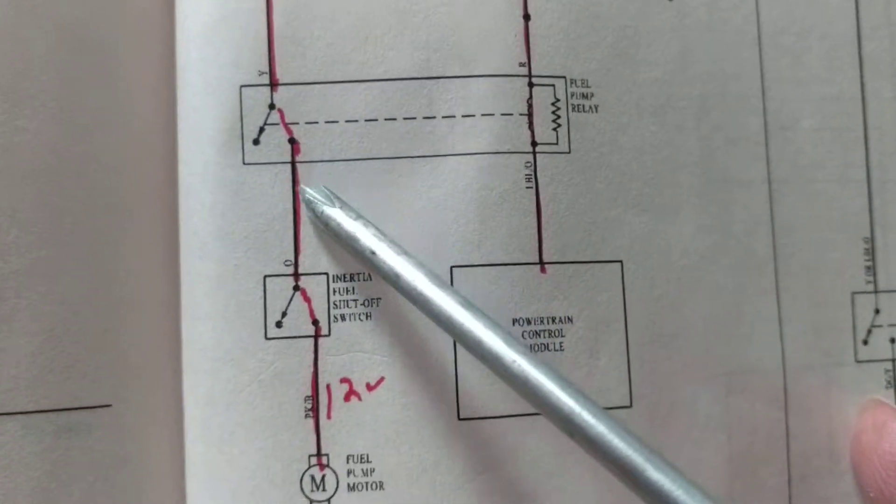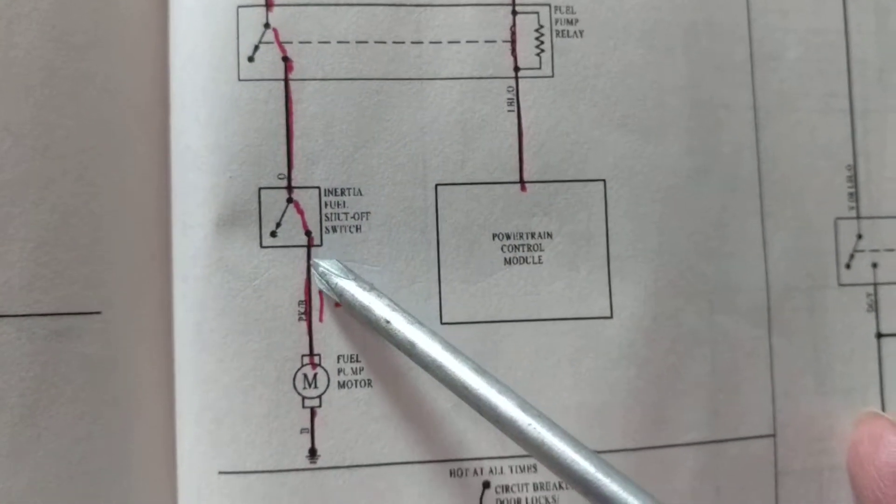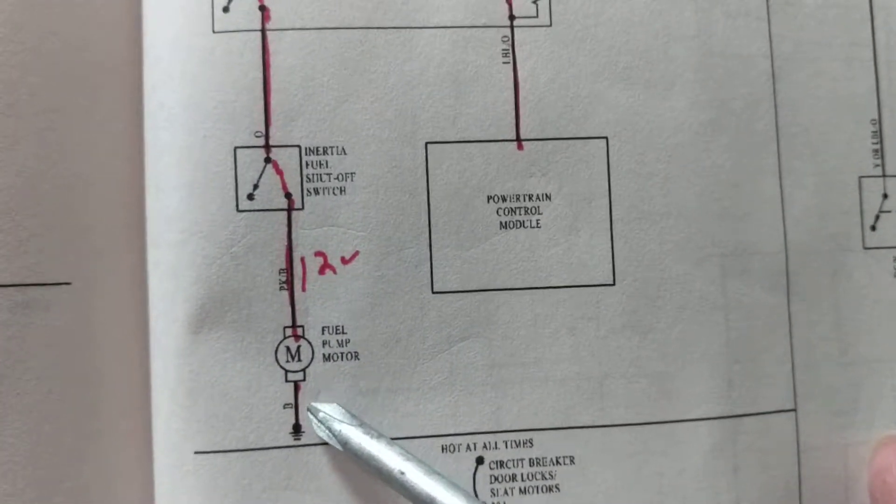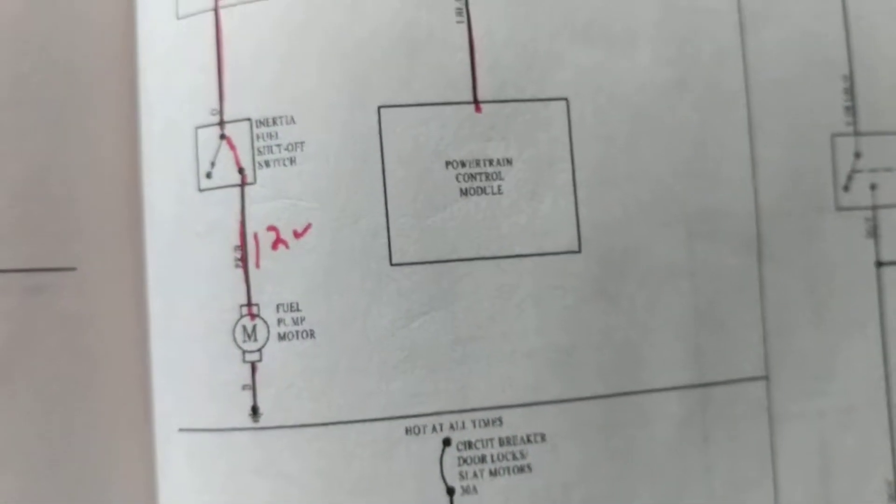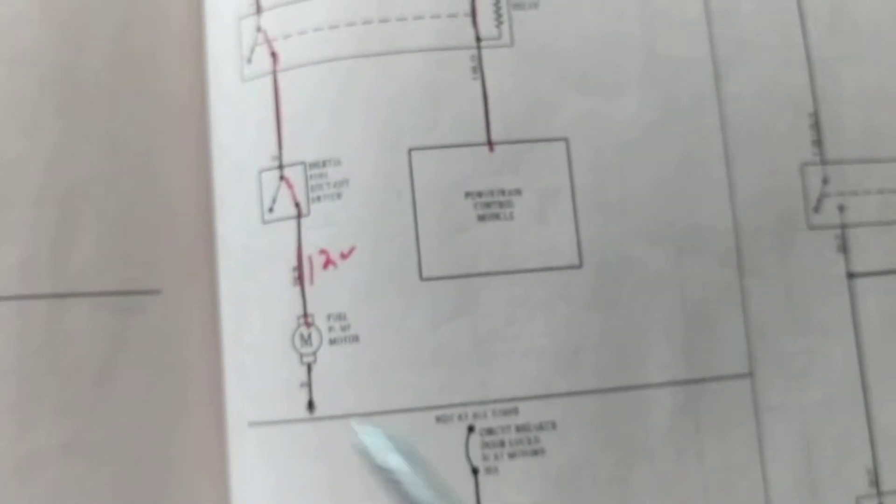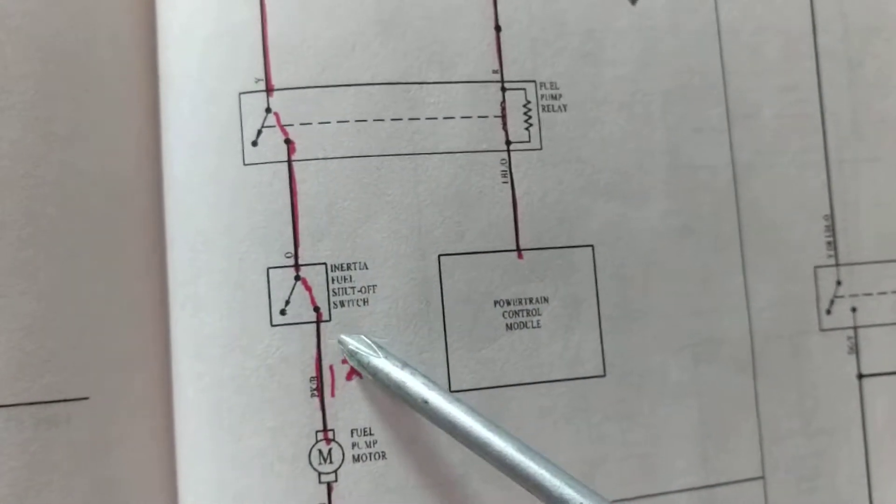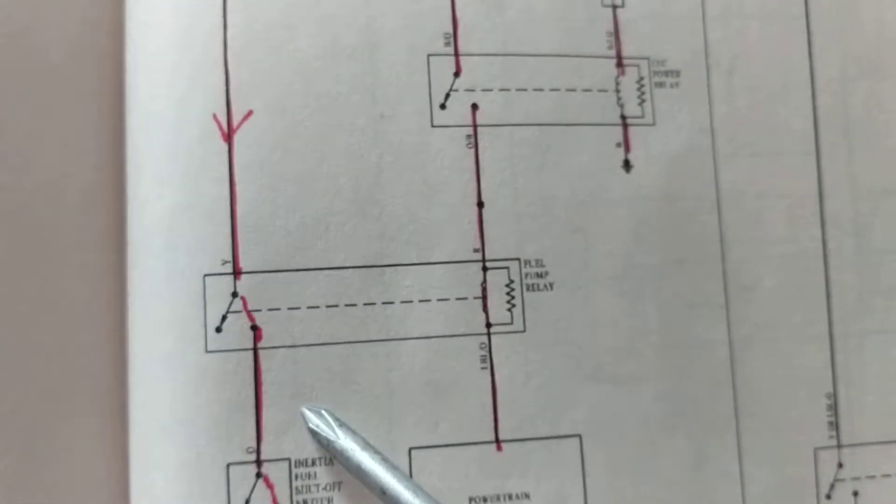Now current will flow through the fuel pump motor, activating the motor to start the fuel pressure. So we need this inertia switch in the correct position for this circuit to work.